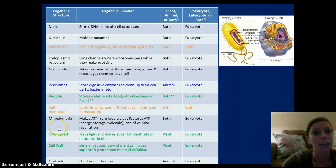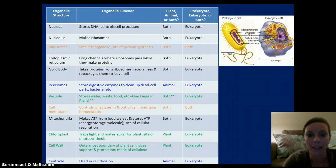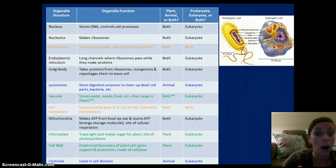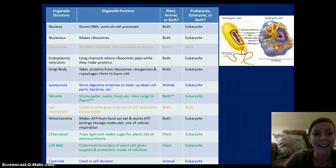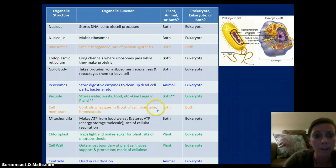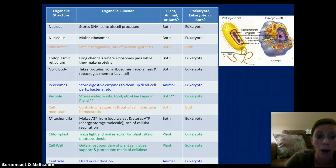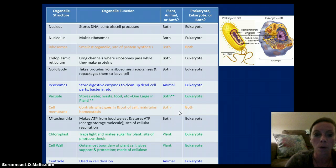We have the cell membrane, which is not necessarily an organelle, but it is an important structure that surrounds the cell and maintains what goes into and out of the cell — it's found in all cells. We have the mitochondria, found in eukaryotic plant and animal cells. This is important because many people think that they do not occur within a plant cell, but they do. Plant cells use cellular respiration as well as photosynthesis for metabolism — they make ATP and are the site of cellular respiration. Chloroplasts are only found in plants and are the site of photosynthesis. The cell wall is only found in plants, and also in fungi and prokaryotic cells — it gives support and protection. And finally, the centriole, found in animal cells only, and it's important in cell division.